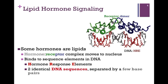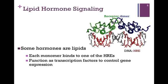Remember, however, that the receptor cannot bind its target DNA unless it's a dimer, and it can't dimerize unless the ligand binds. So, again, it's the binding of the ligand to the receptor that initiates the cascade of events.